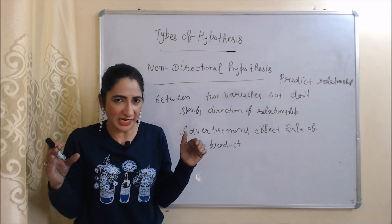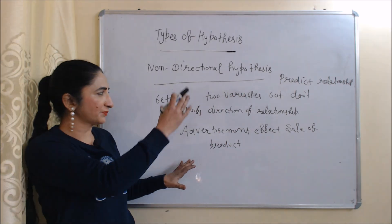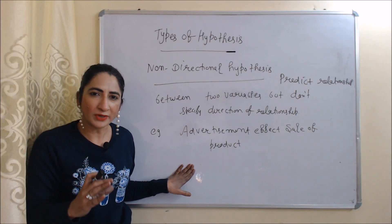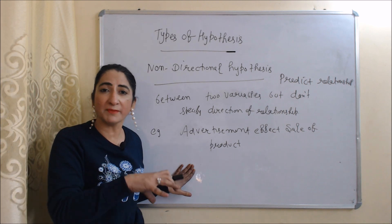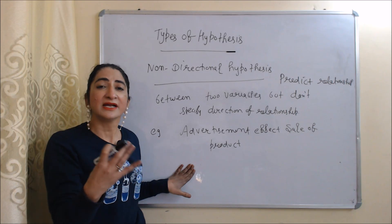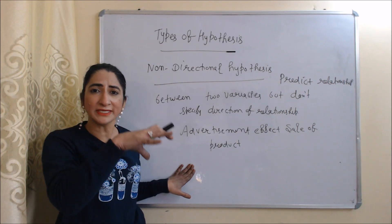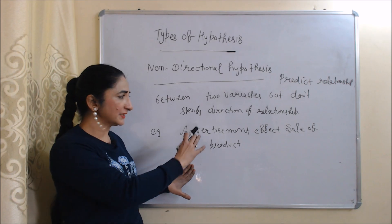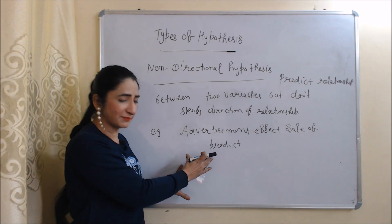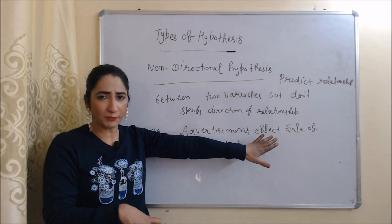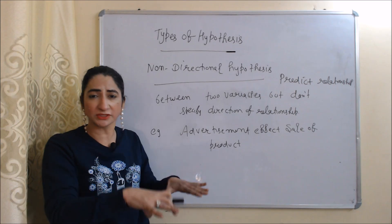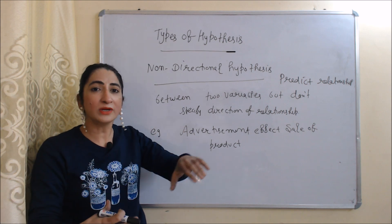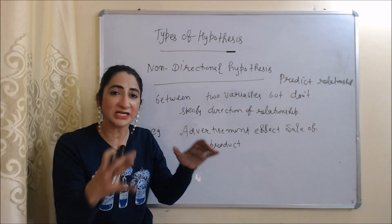Now we will see non-directional hypothesis. Non-directional hypothesis predicts the relationship between two variables but does not specify the direction of the relationship — it only tells us about the relationship but does not indicate whether it is positive or negative. For example, advertisement affects the sale of product. This shows there is a relationship between advertisement and sale of product, but does not specify whether it is positive or negative, so it is called a non-directional hypothesis.